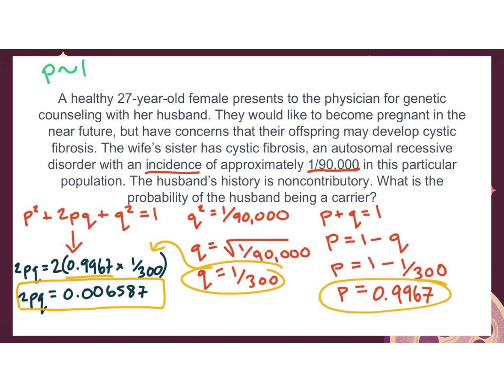Here is one practice problem you can work through on your own. You see that you're given an incidence of approximately 1 in 90,000 — that gives you q² because it's recessive. You find q² first, then solve from there. You don't have to solve in this exact way; this is just an example. On the AP test, there could be one or two of these — not a bunch of free responses. If it's multiple choice, you just pick the answer. Reference your worksheet and the practice problems from Hardy-Weinberg.